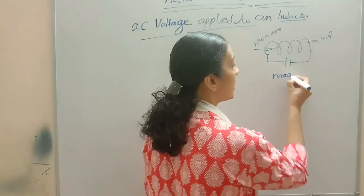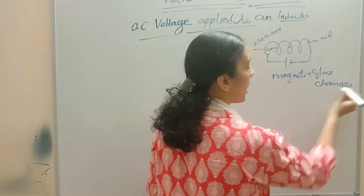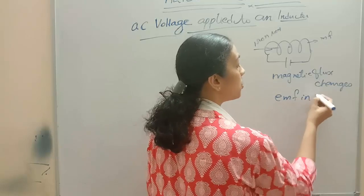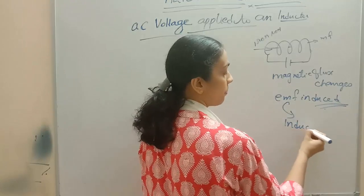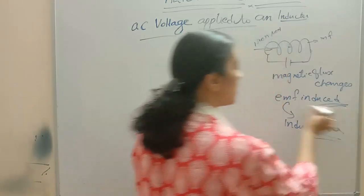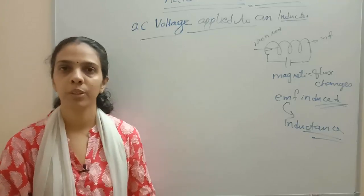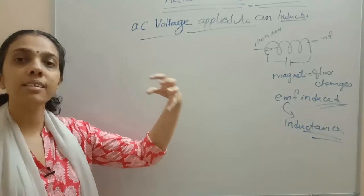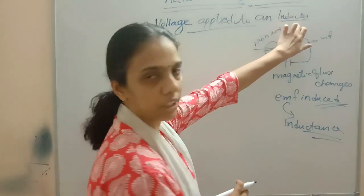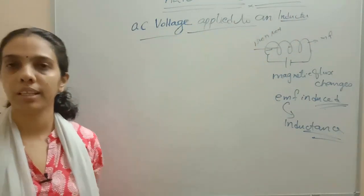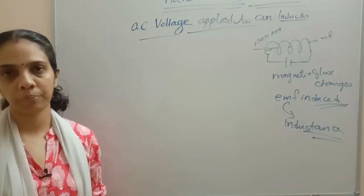If magnetic flux linked with the circuit changes, an EMF will be induced in the circuit. This property is called inductance. The apparatus which provides this electromagnetic induction is called an inductor. So when flux linked with the circuit changes, an EMF is induced in the circuit.